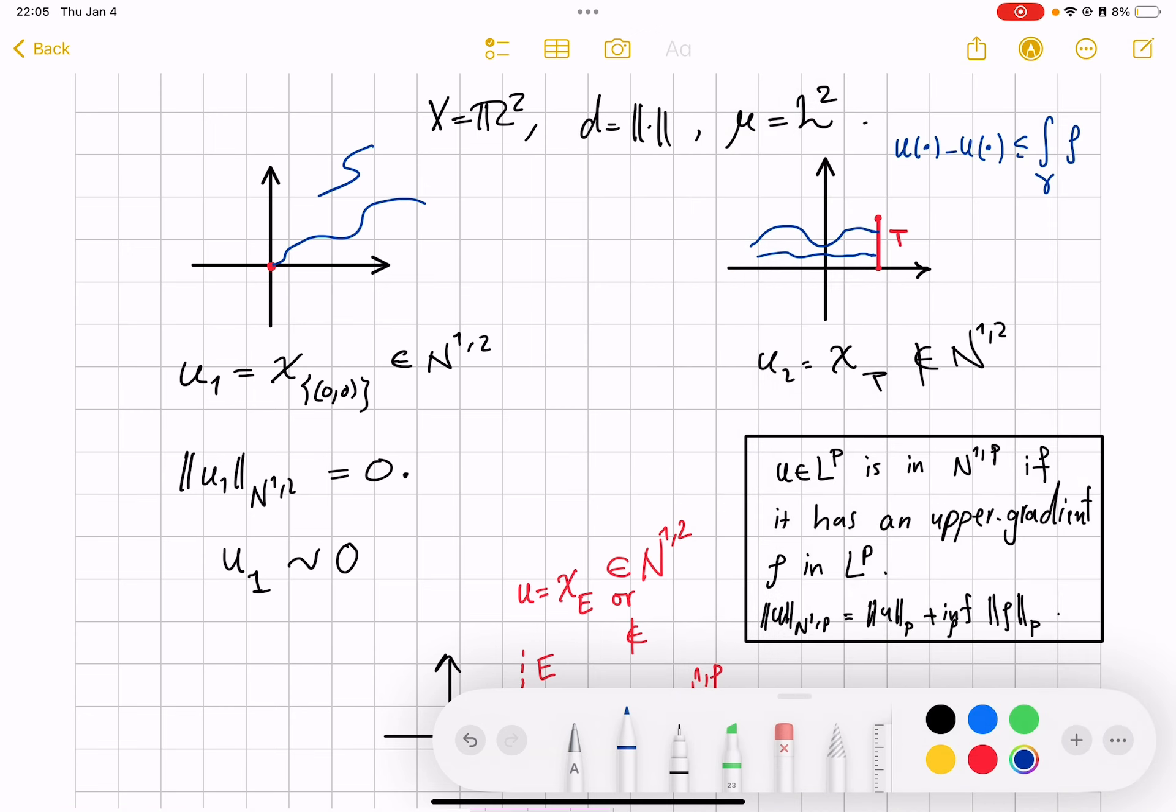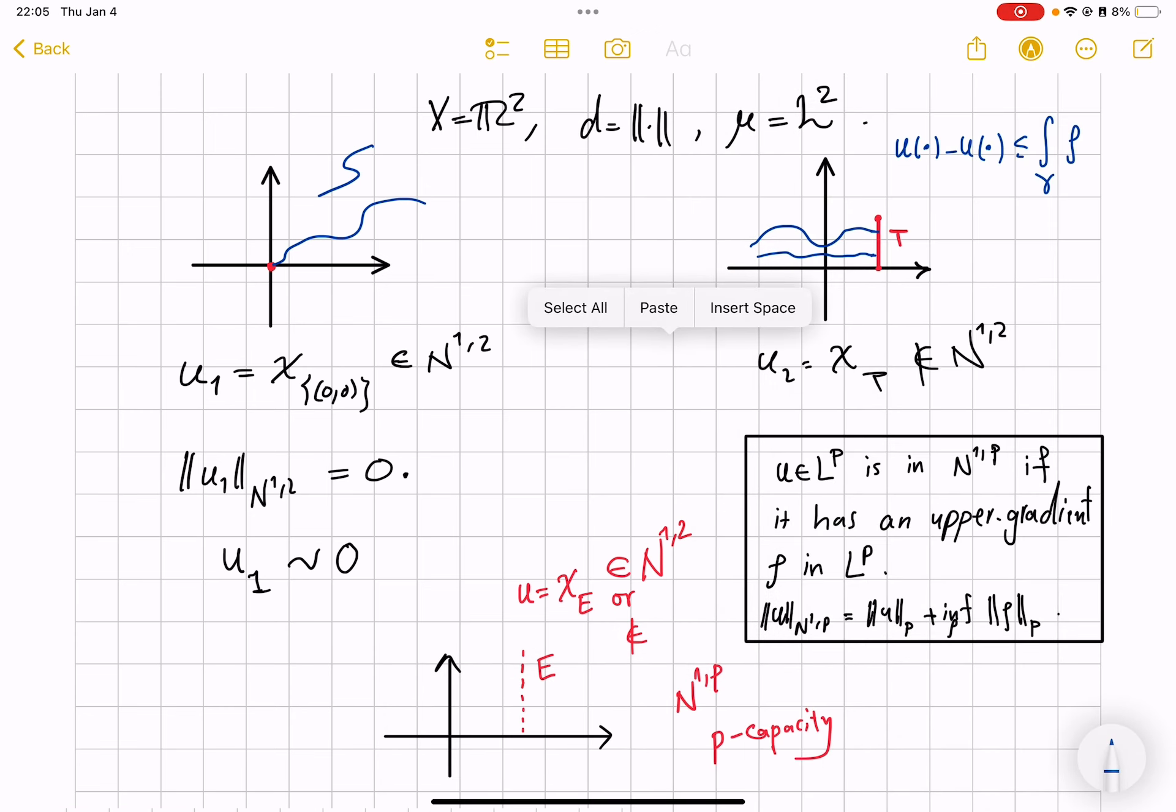Remember that part of the pain in proving that this function belongs to the Sobolev class was to make sure that we find an upper gradient rho so that the upper gradient inequality, this one here, works in particular for curves that meet the origin. So for every other curve, like this one, which has nothing to do with the origin, there is nothing to prove, and rho equals zero would perfectly work as an upper gradient.